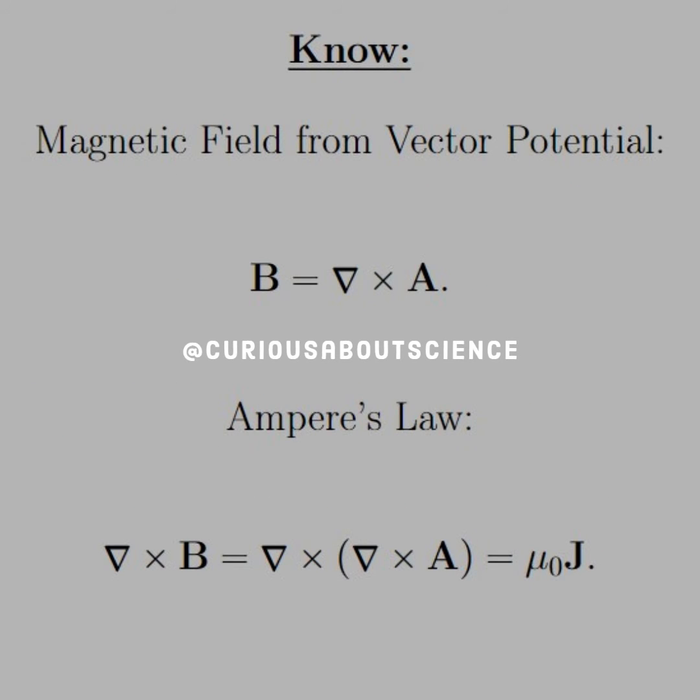Alright, so the magnetic field from a vector potential we know is B equal del cross A, and Ampere's law is read as del cross B equal del cross del cross A equal mu naught J, or the current density.